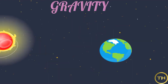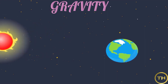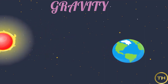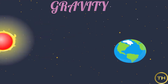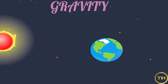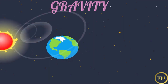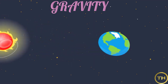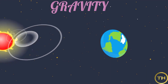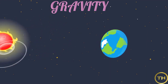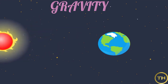Next we learn about gravity. All heavenly bodies exert a force of attraction, or a pull, on one another. This force is called gravity. The sun exerts gravitational pull on all planets, whereas the tendency of the planets is to move away from the sun. As a result of these two forces, our planets keep revolving around the sun at a fixed distance, in a fixed orbit.